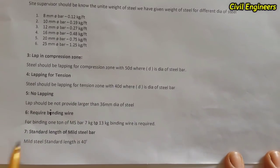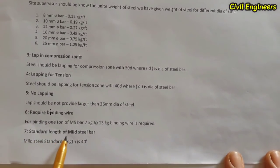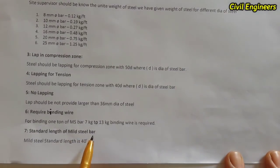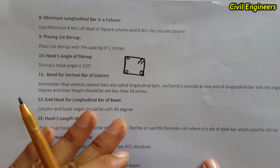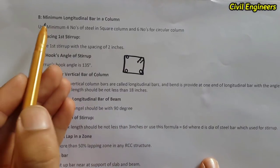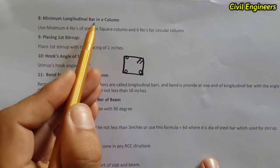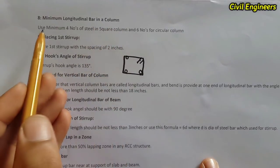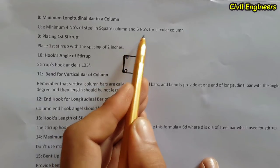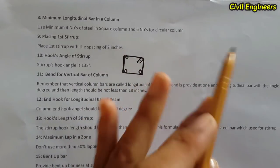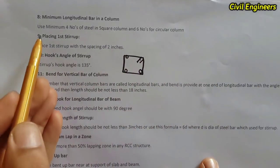The seventh term: the standard length of a mild steel bar is 40 feet. The eighth term is minimum longitudinal bars in a column: use a minimum of four bars in a square column and six bars in a circular column.